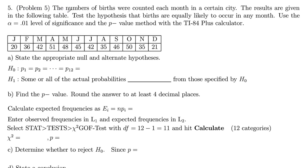In problem number five, we're looking at the number of births counted each month in a certain city. The results are given in the table here. We want to test the hypothesis that the births are equally likely to occur in any month.